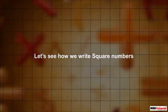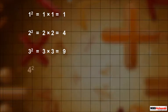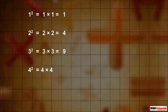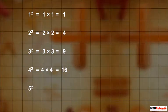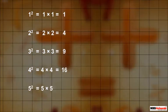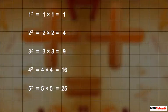Let's see how we write square numbers. The square of 1 is written as 1 into 1, which is equal to 1. The square of 2 is written as 2 into 2, which is equal to 4. The square of 3 is written as 3 into 3, which is equal to 9. The square of 4 is written as 4 into 4, which is equal to 16. The square of 5 is written as 5 into 5, which is equal to 25.